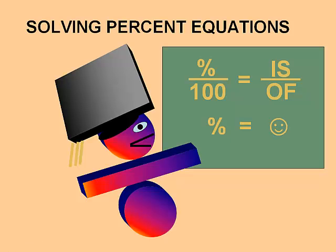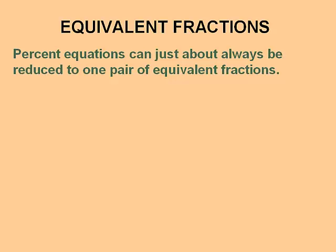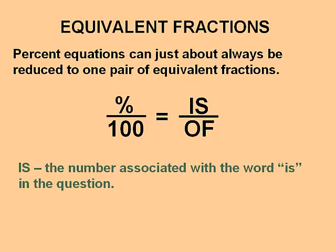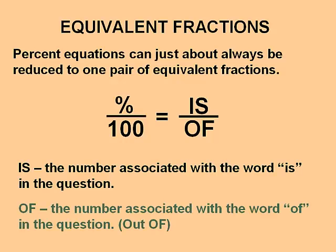This lesson is on solving percent equations. Percent equations can almost always be reduced to one pair of equivalent fractions: percent over 100 equals is over of. Percent over 100 comes from our definition of percent, meaning out of a hundred. The 'is' side is the number associated with the word 'is' in the question, and 'of' is the number associated with the word 'of' in the question.